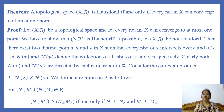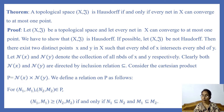We now define a relation on P as follows. Let (N1, M1) and (N2, M2) belong to P, where N1, N2 are neighborhoods of X and M1, M2 are neighborhoods of Y. We define (N1, M1) ≥ (N2, M2) if and only if N1 ⊆ N2 and M1 ⊆ M2. This relation is reflexive because every set is a subset of itself.